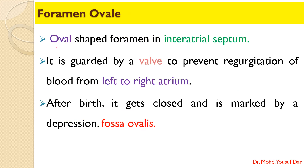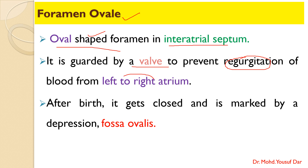Coming to the next term — the foramen ovale: the foramen ovale is an oval-shaped foramen present in the interatrial septum. This foramen is guarded by a valve which prevents regurgitation of blood from the left to the right atrium. After birth, the foramen ovale gets closed and forms a depression known as the fossa ovalis.